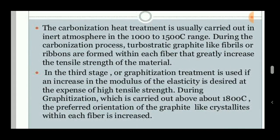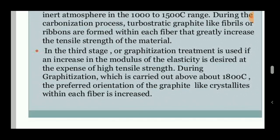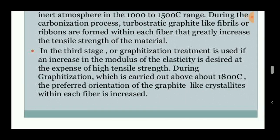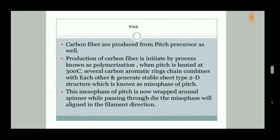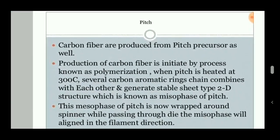The carbonized compound is heated to 1000 to 2500 degrees Celsius. During this stage, turbostratic graphite-like fibrils increase the tensile strength of the material. In the graphitization stage, the carbonized compound is heated to about 1800 degrees Celsius, and the preferred orientation of the graphite-like crystals within each fiber is increased.